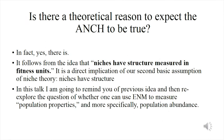Now, is there a theoretical reason to expect the Abundant Niche Center Hypothesis to be true? The answer is yes. It follows from the idea discussed in past talks: that niches have structure, and that structure is measured in fitness units. It is a direct implication of our basic second assumption of niche theory. There are two assumptions: Hutchinson's duality — the relationship between niche space and geographic space — and the second assumption that niches have a structure that is not just random fitness values, but well arranged in some order. In this talk I will re-explore whether one can use ecological niche modeling to measure population properties, and more specifically, population abundance.